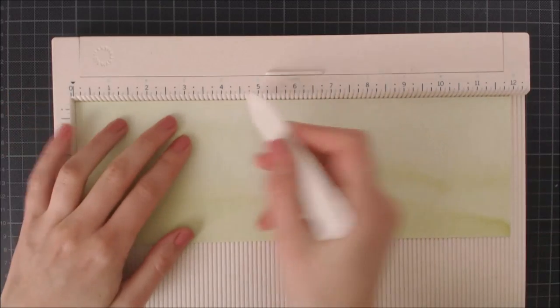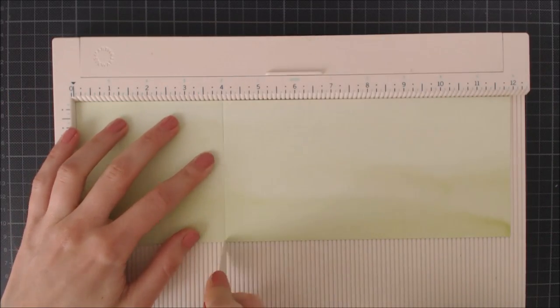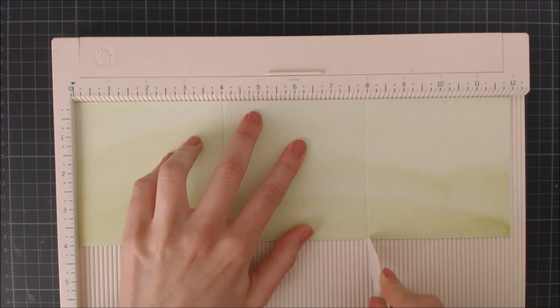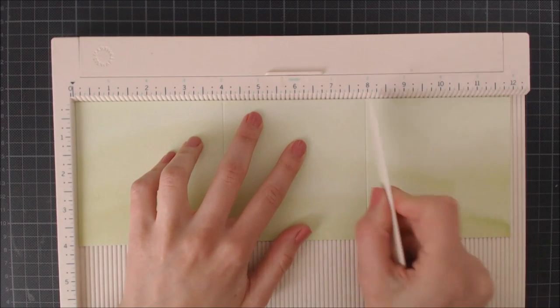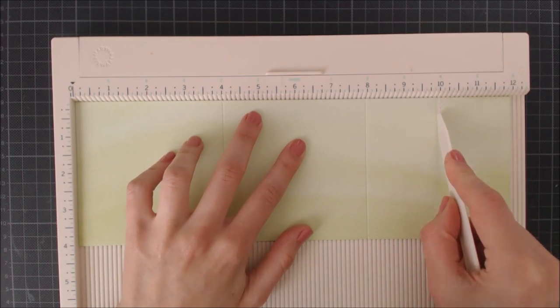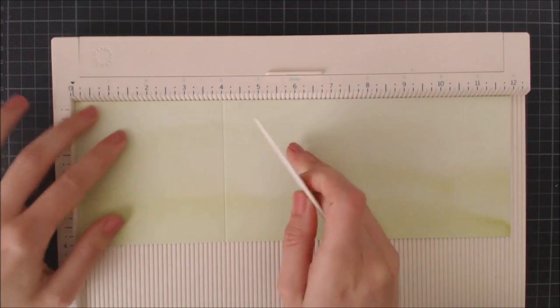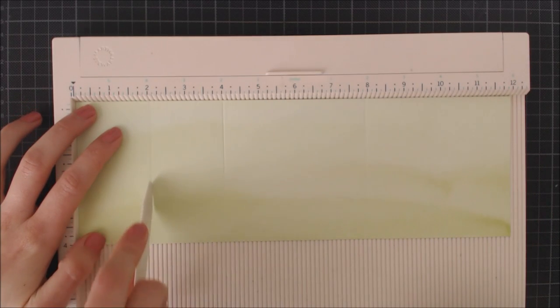To start off I cut a 4 inches tall piece from one of these sheets and I'm using my scoring board to do some score lines. I'm doing two strong lines at the 4 and 8 inches marks and two soft lines at the 2 and 10 inches marks.